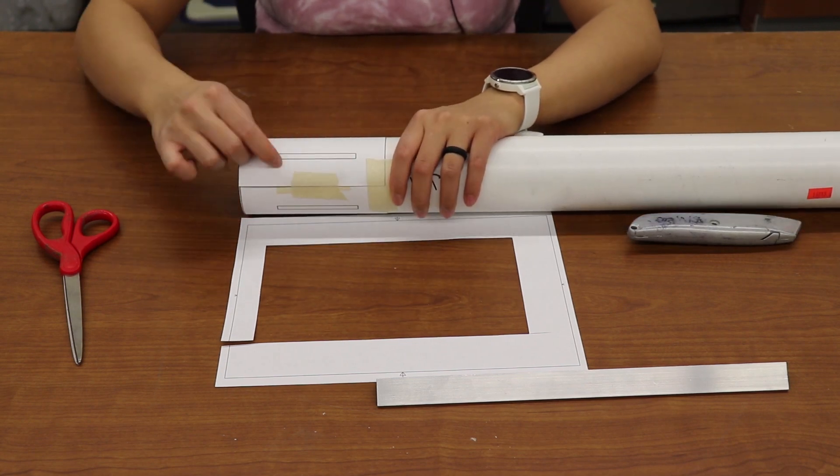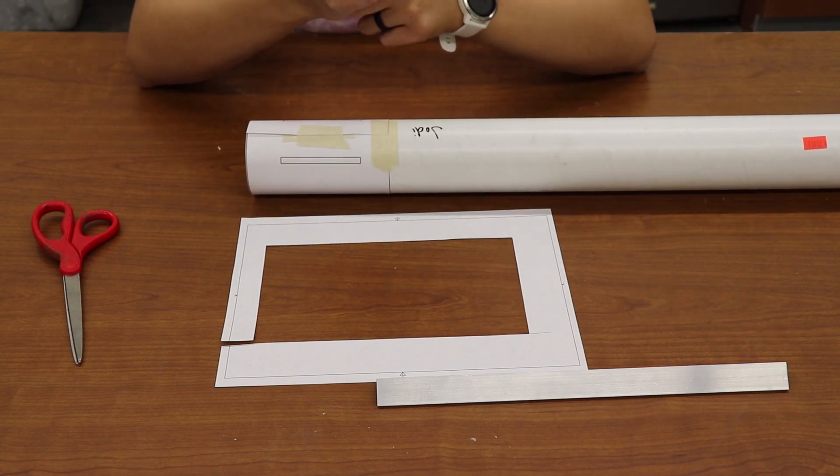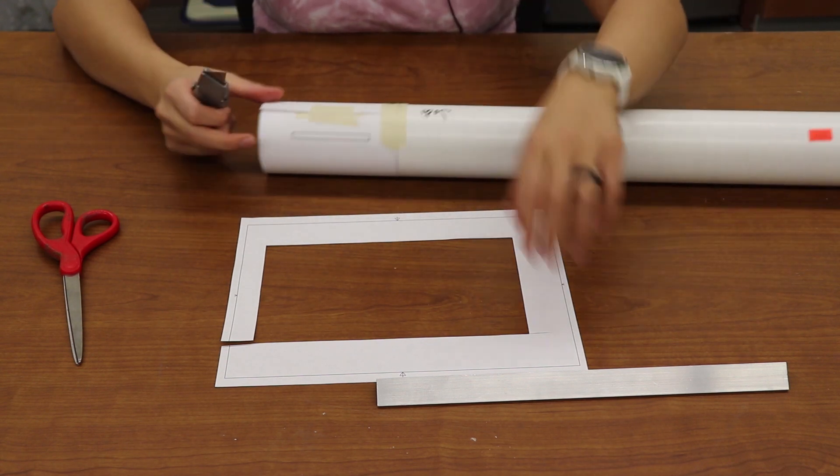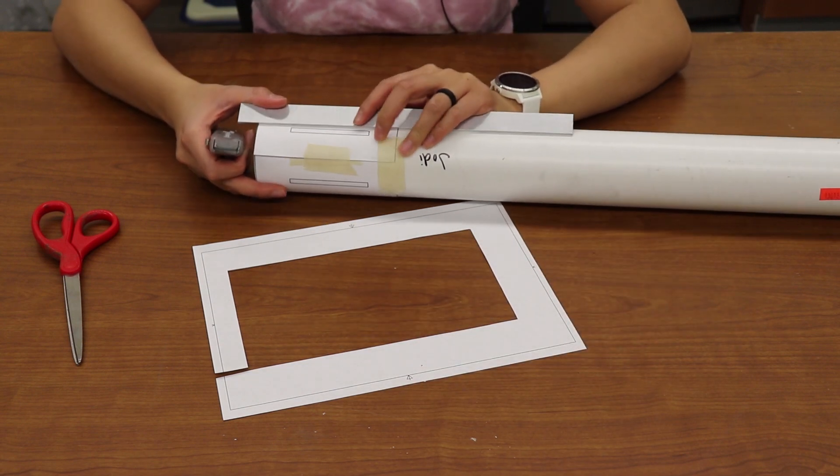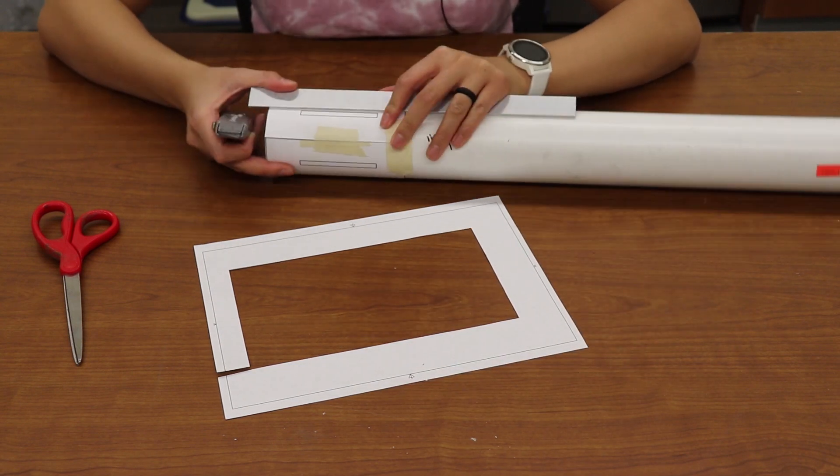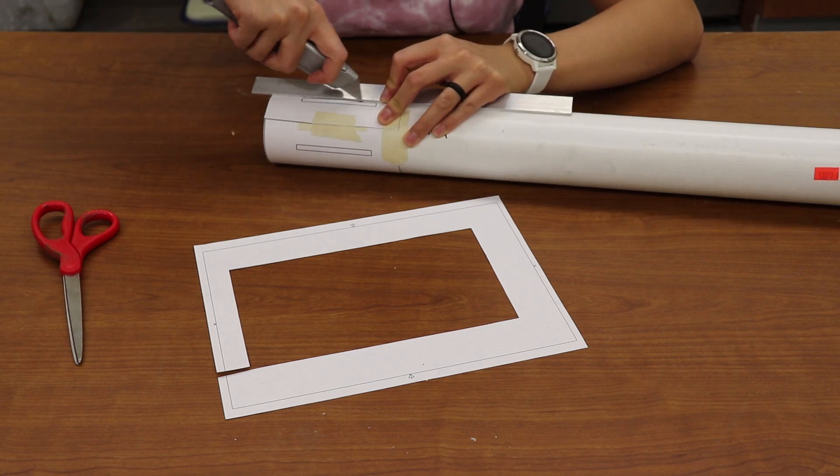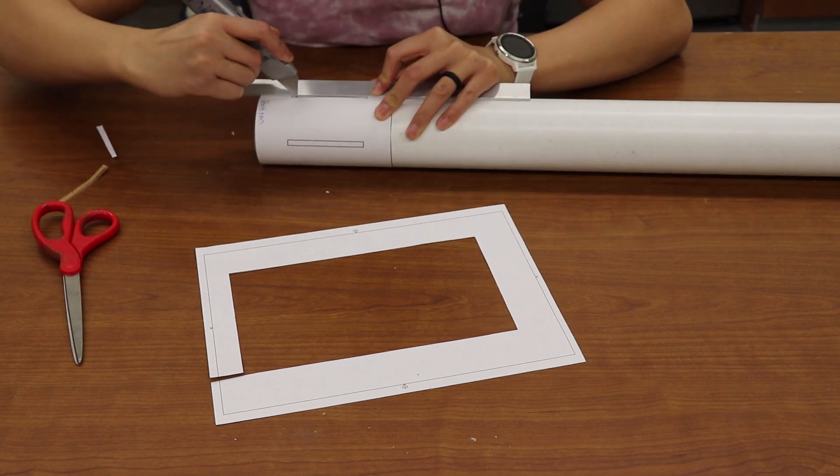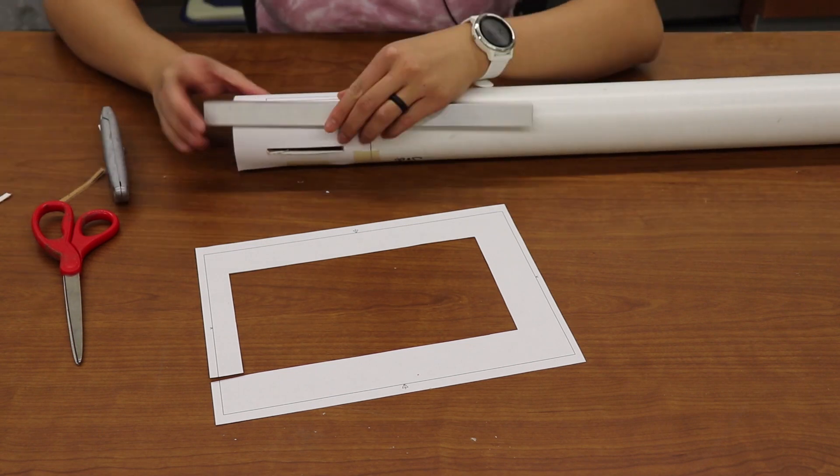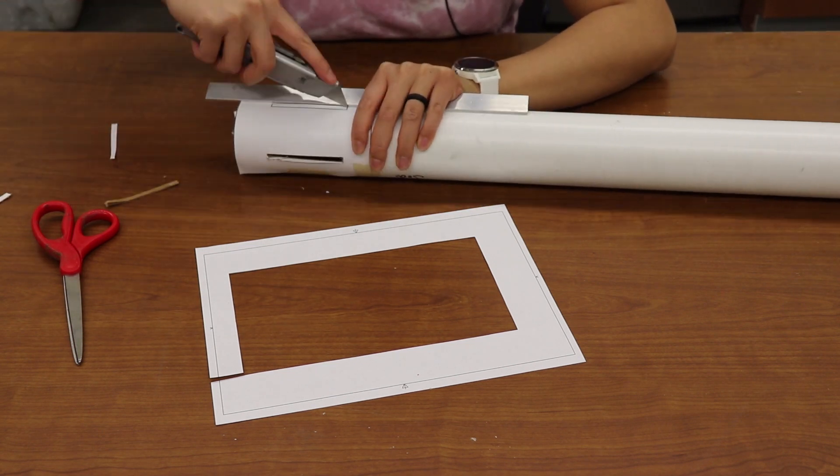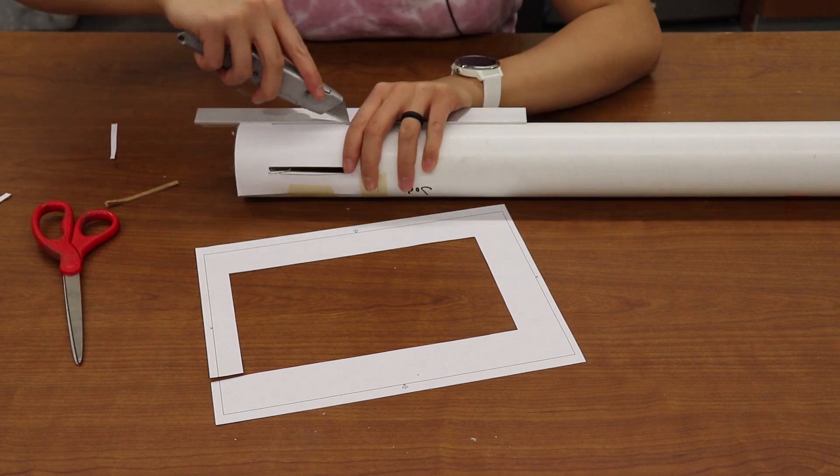Now that I have my fin slot drawing taped onto my body tube, I can use a razor and cut out where my fin slots need to be. I can use a straight edge to help me cut straighter lines as well. What's nice about having the fin slot drawing is that I can just take it around the body tube and take the razor and trace the lines that I've already created in Fusion 360. I don't have to draw it out myself with a sharpie or something.